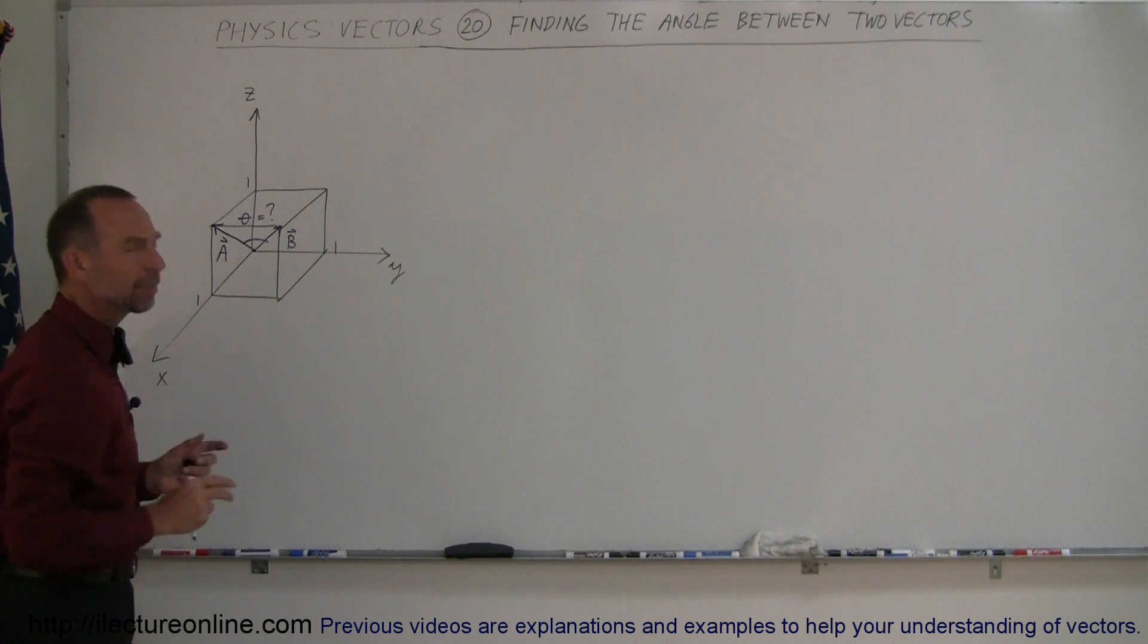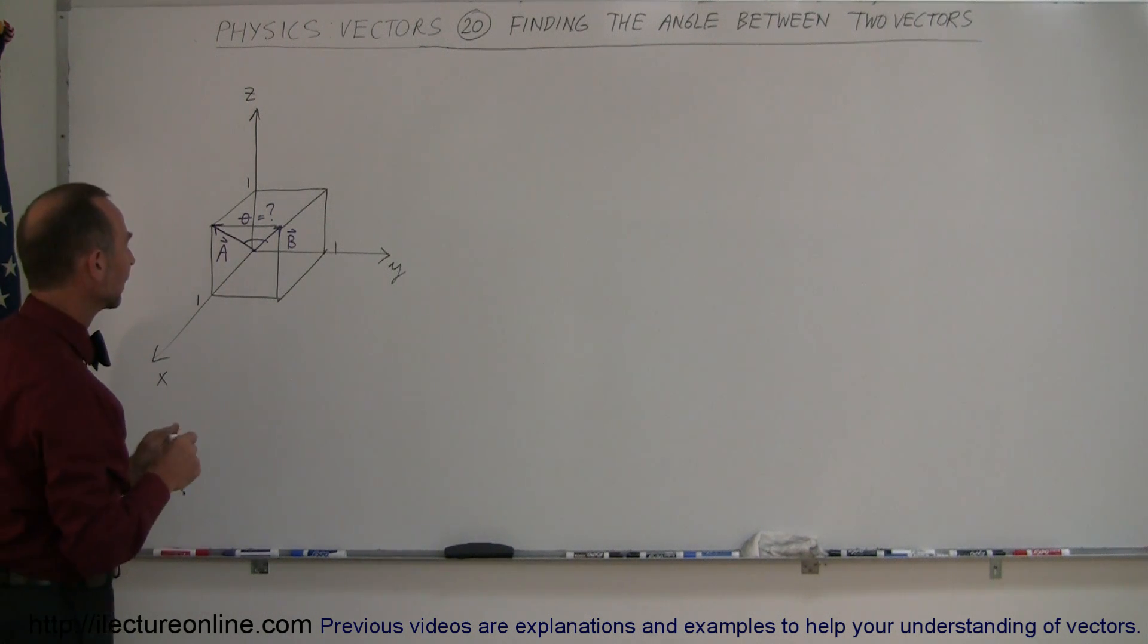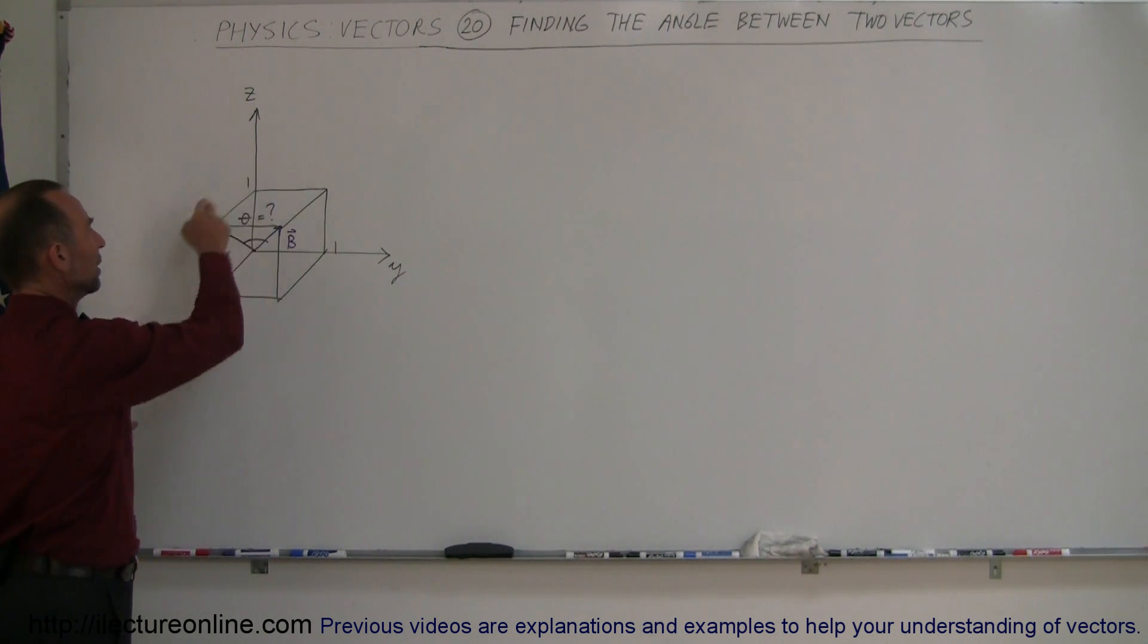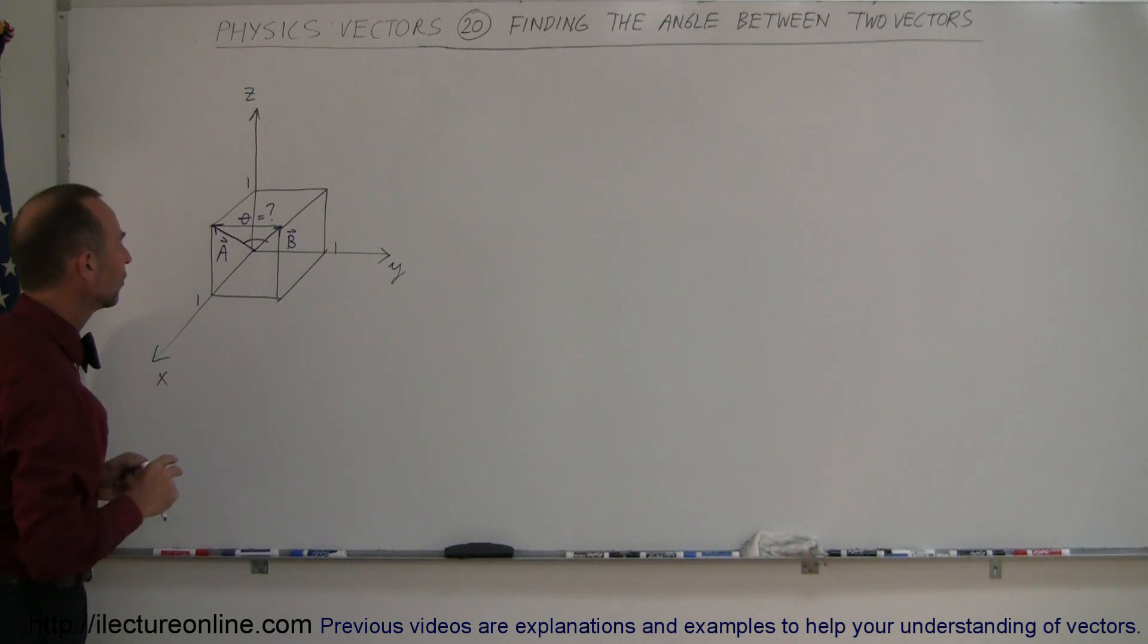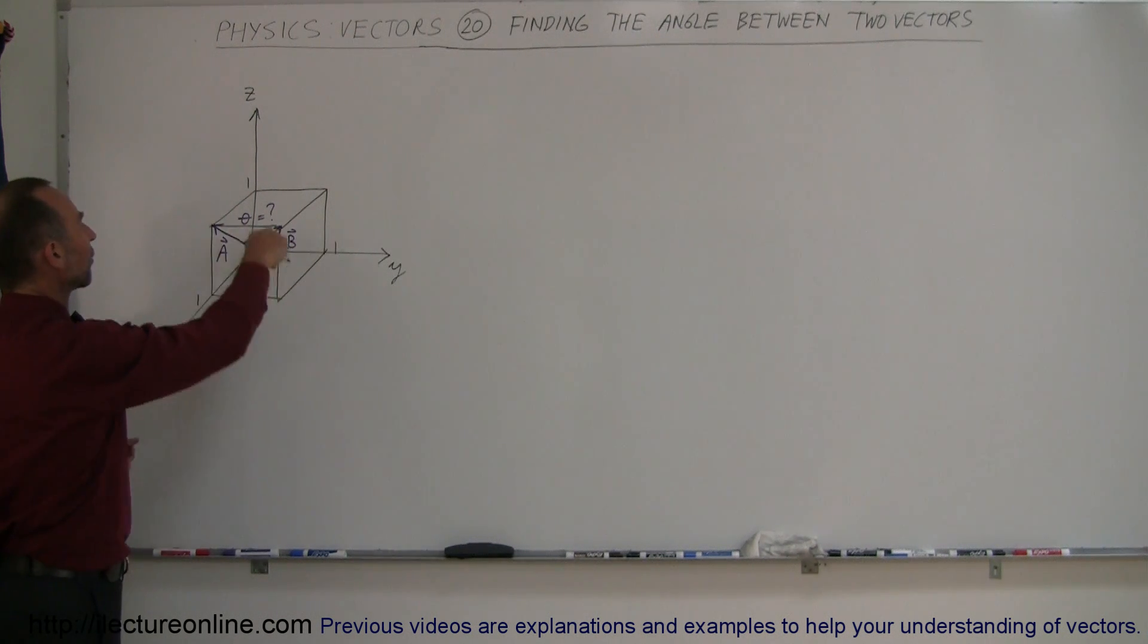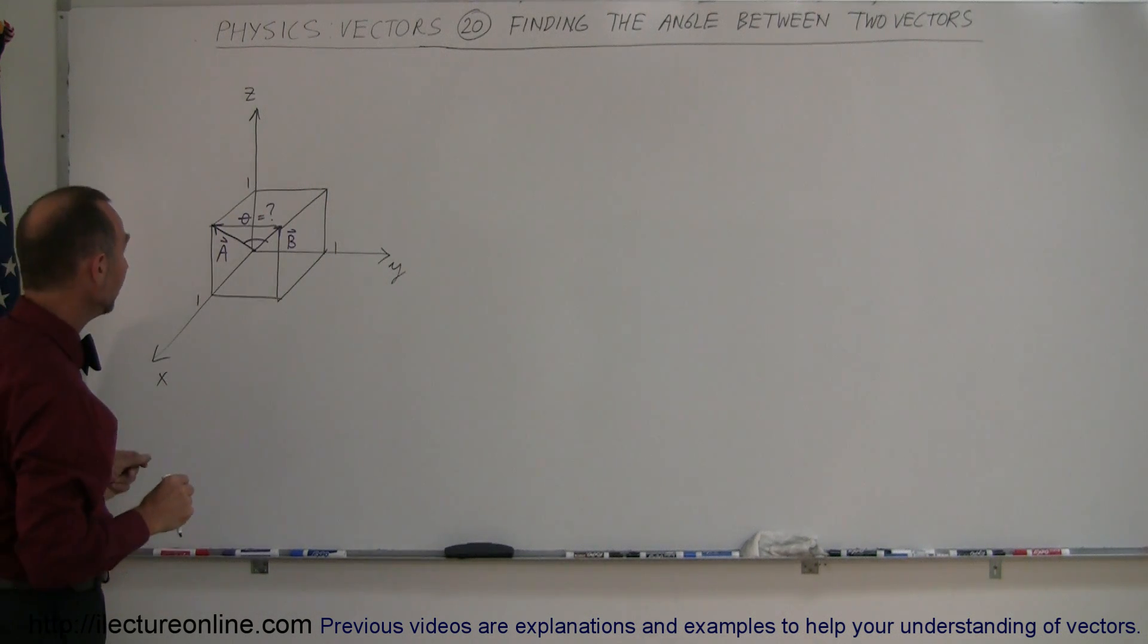Here we have vector A and vector B, and let me explain a little bit about where they're pointing. They're both starting from the origin in a three-dimensional space. I have a cube drawn for reference. Notice that the size of each of the cube is one by one by one.